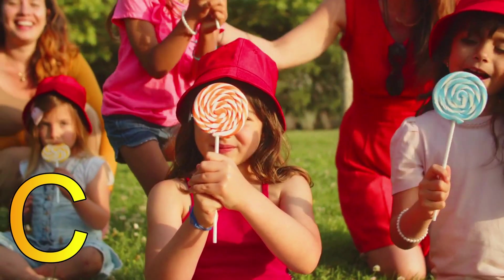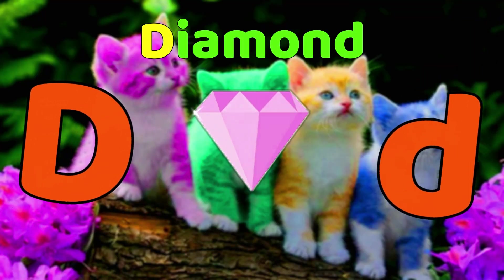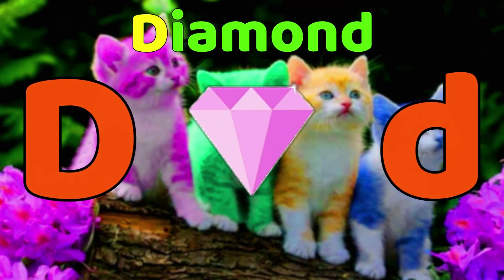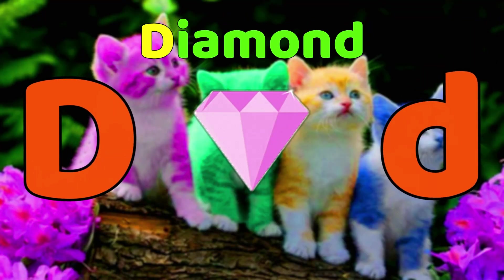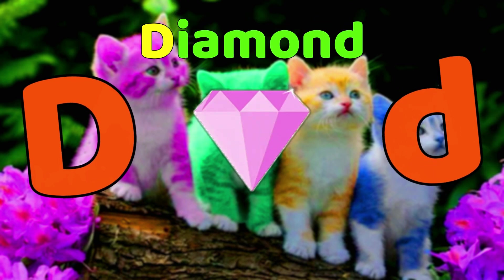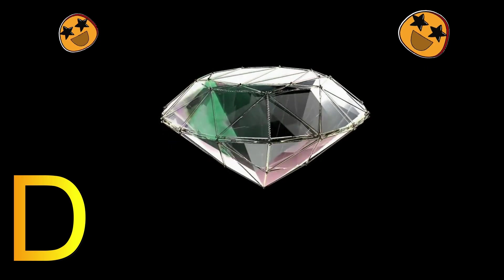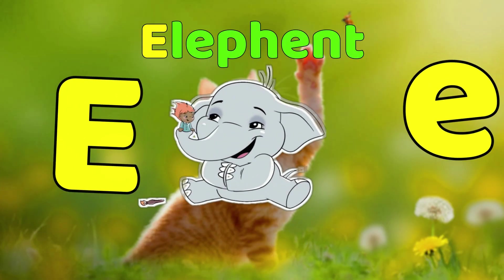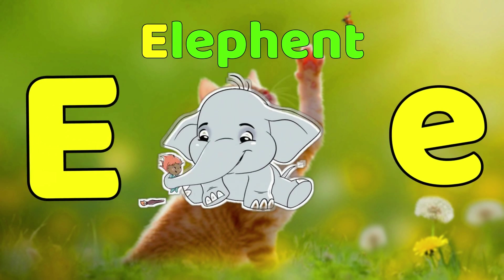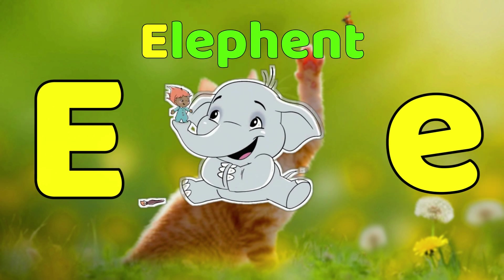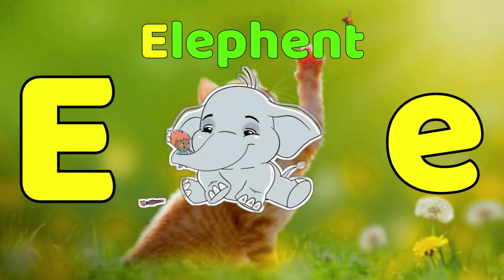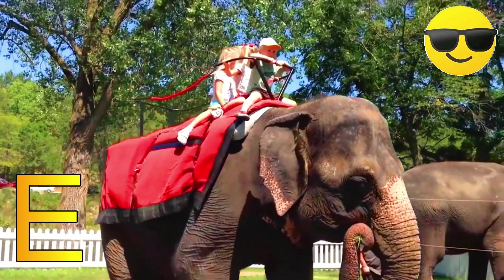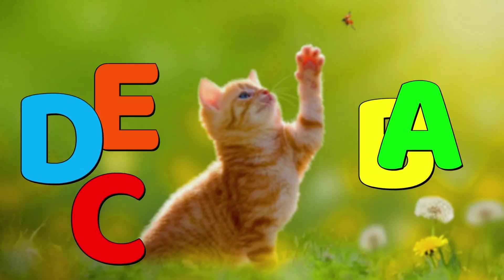D is for Diamond. D, Diamond. D, Diamond. D, Diamond. E is for Elephant. E, Elephant. E, Elephant. E, Elephant.